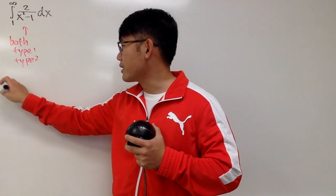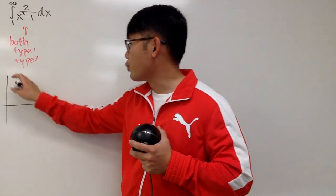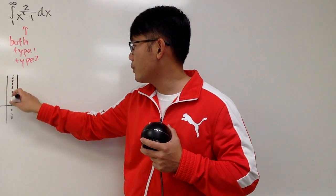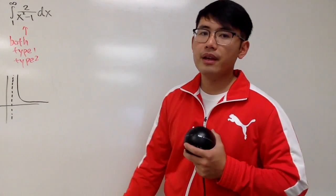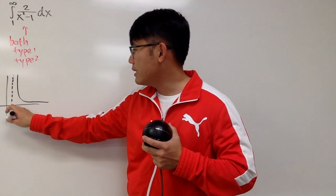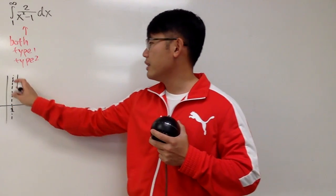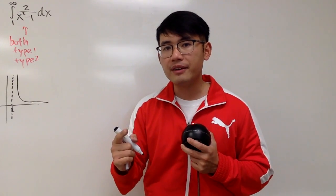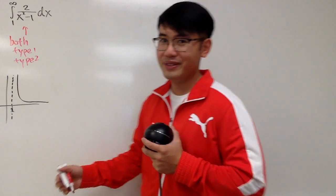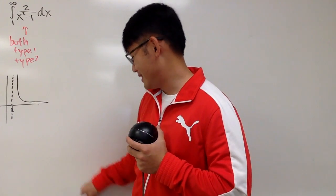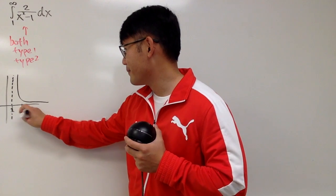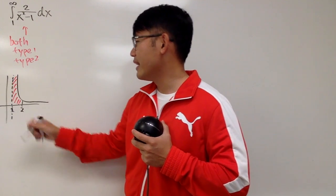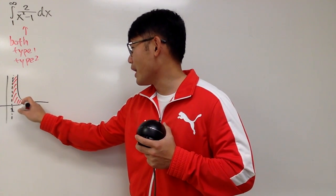Let's look at the graph quickly. When x is 1, you have the vertical asymptote, and the graph of 2 over x squared minus 1 looks like this. This integral is trying to calculate the area from 1 to infinity. I'm going to break this into two regions by picking an innocent number — let's just pick 2. I'll put 2 right here, find the first region, then add the second region.